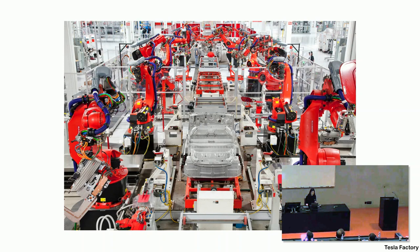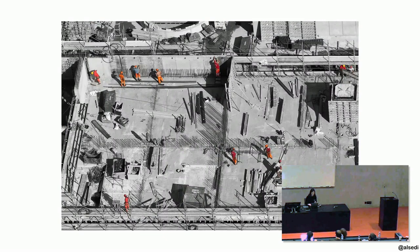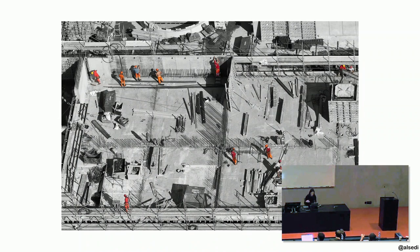Despite these advances in technology in other industries, the physical production of our built environment remains very heavily reliant on people in the field on a building site. Architecture uses a model for labor that's highly analog, leaning on an unskilled, transient labor force that's in short supply around the world. The realization of buildings also uses a design-build framework that's highly fragmented and reliant on the precise coordination of a heavily striated workforce of contractors, subcontractors, sub-subcontractors.